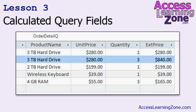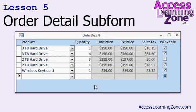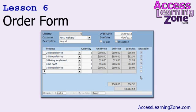In lesson three, we're going to learn how to create calculated query fields — we'll take the unit price and multiply it by the quantity to get the extended price for that line item. In lesson four, we're going to learn how to calculate sales tax, learn about the IIF function, and learn how to properly round numbers. In lesson five, we're going to build our order details subform — the line items you'll see on the order form. We'll set up a combo box to pick a product, lock the unit price so the user can't change it, and set up the relationships between our customer and order table, and also our order and order details tables. In lesson six, we're going to set up our main order form, and we'll learn about the ISNULL function and lots of other little tricks.